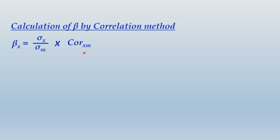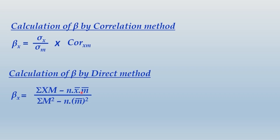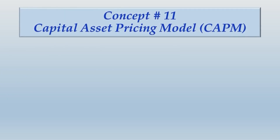The third method is the direct method: beta equals summation of XM minus N times X-bar times M-bar, all divided by summation of M-squared minus N times M-bar squared. From an examination viewpoint this is not very important, so you may avoid it. Learning it would just be an added advantage. Let us move ahead to concept number 11, the capital asset pricing model.